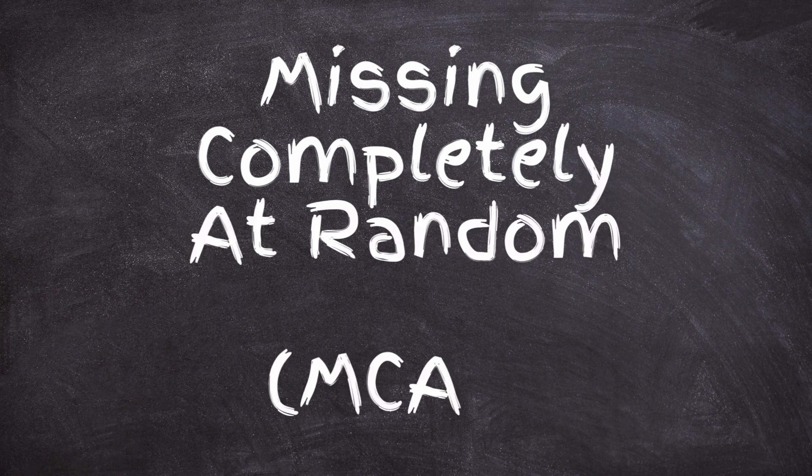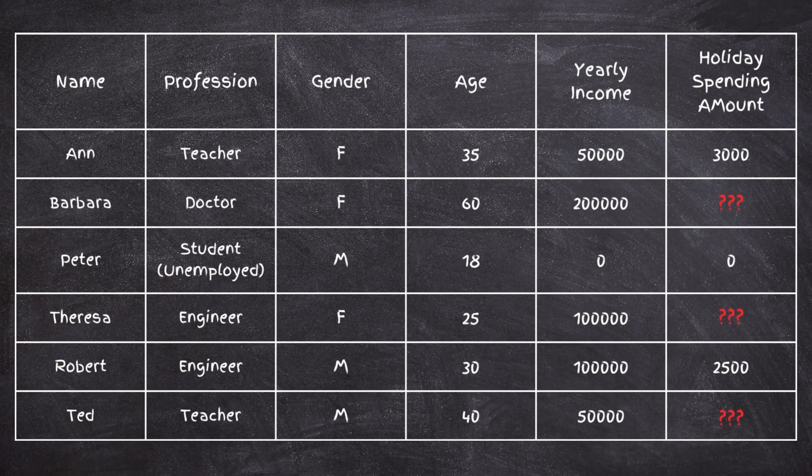Not all missing data is the same — there are actually four different types. The first is Missing Completely at Random, or MCAR. This occurs when the reason for the data being missing has nothing to do with the rest of the data. There's no underlying reason for a column value to be empty, so all samples have an equal chance of having a missing value for that column. For example, if holiday spending is missing across different ages, genders, and professions with no clear pattern, that's MCAR.